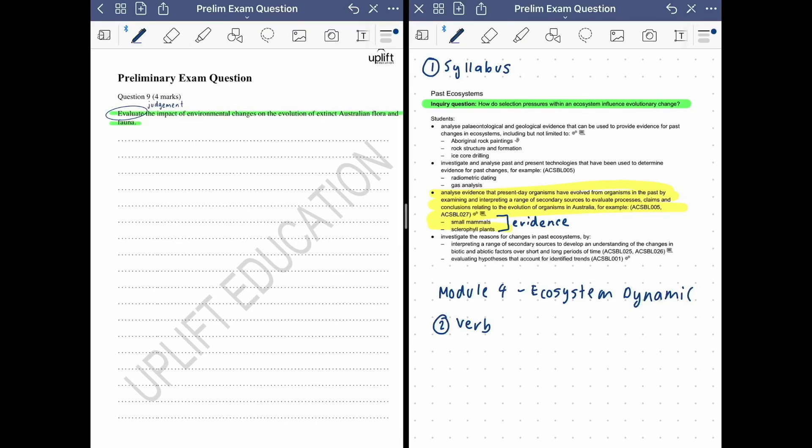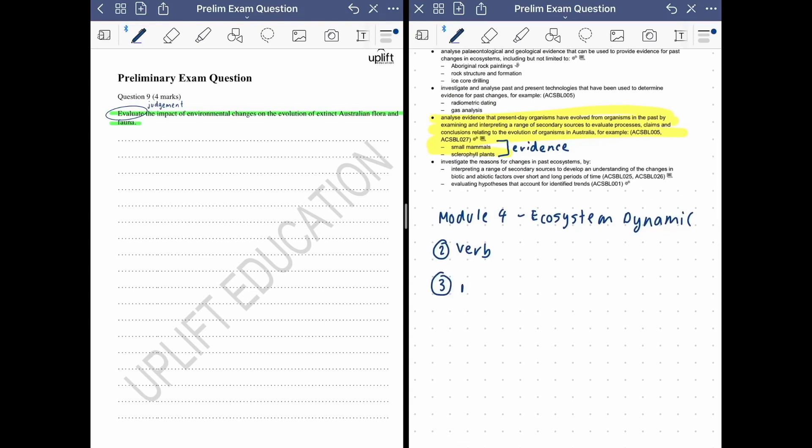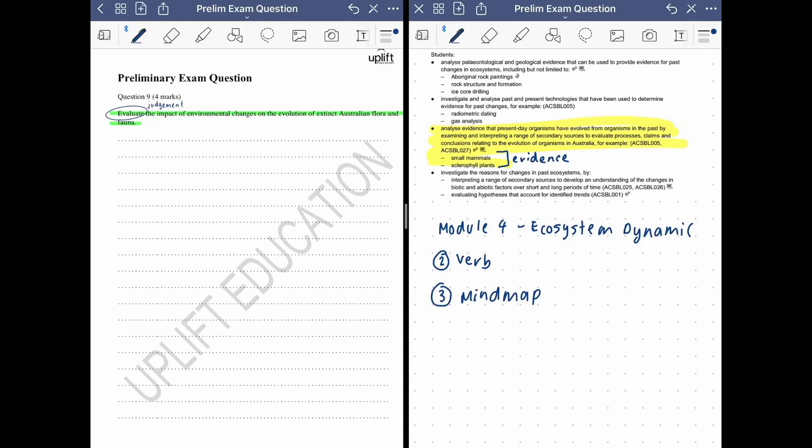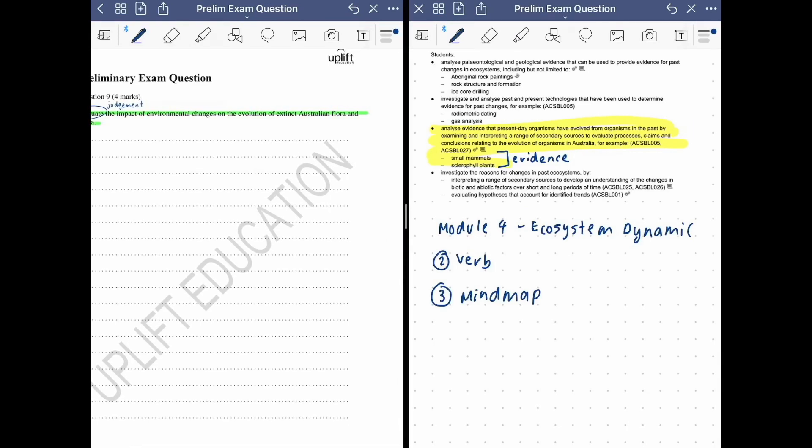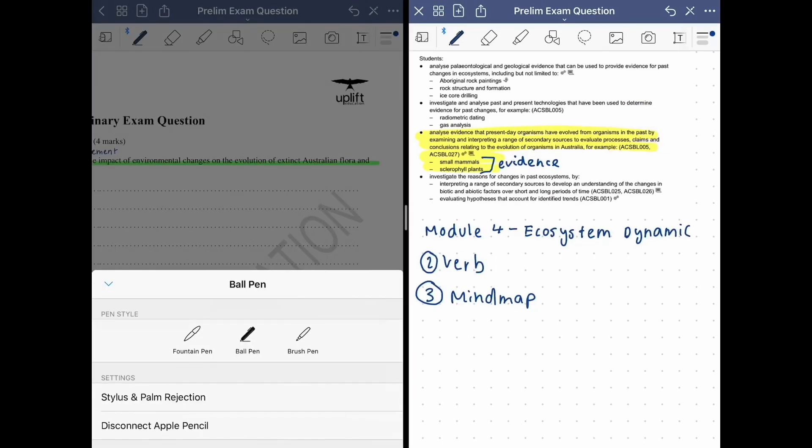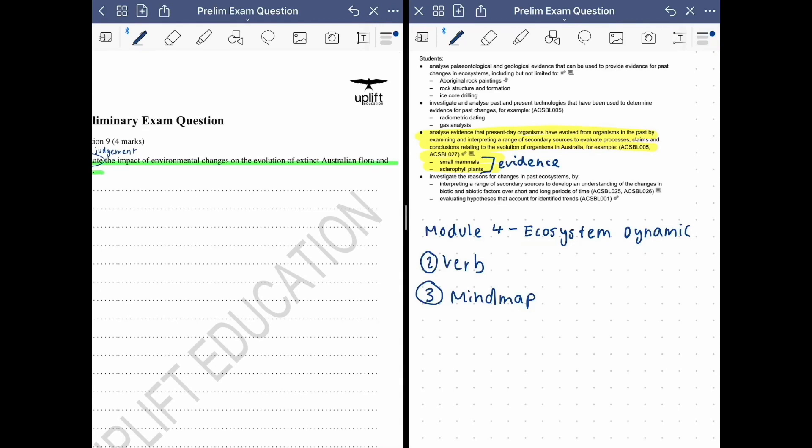Now we've got that down, the next thing I like to do is essentially a mini mind map above the question. Since we know this is the area of the syllabus that everything is specifically coming from, the highlighted yellow bit, I like to put that in on top of my question. So I have a plan essentially of how I'm going to answer it. So Australian flora and fauna. It's good to have examples of each and we can take that directly from our syllabus.